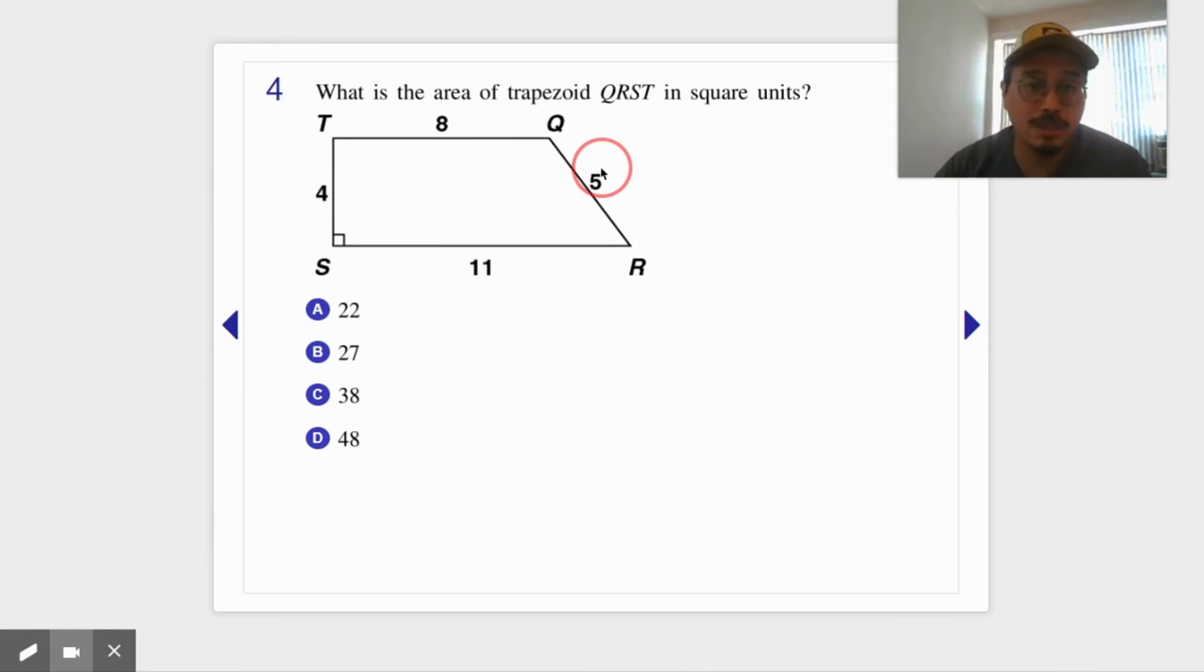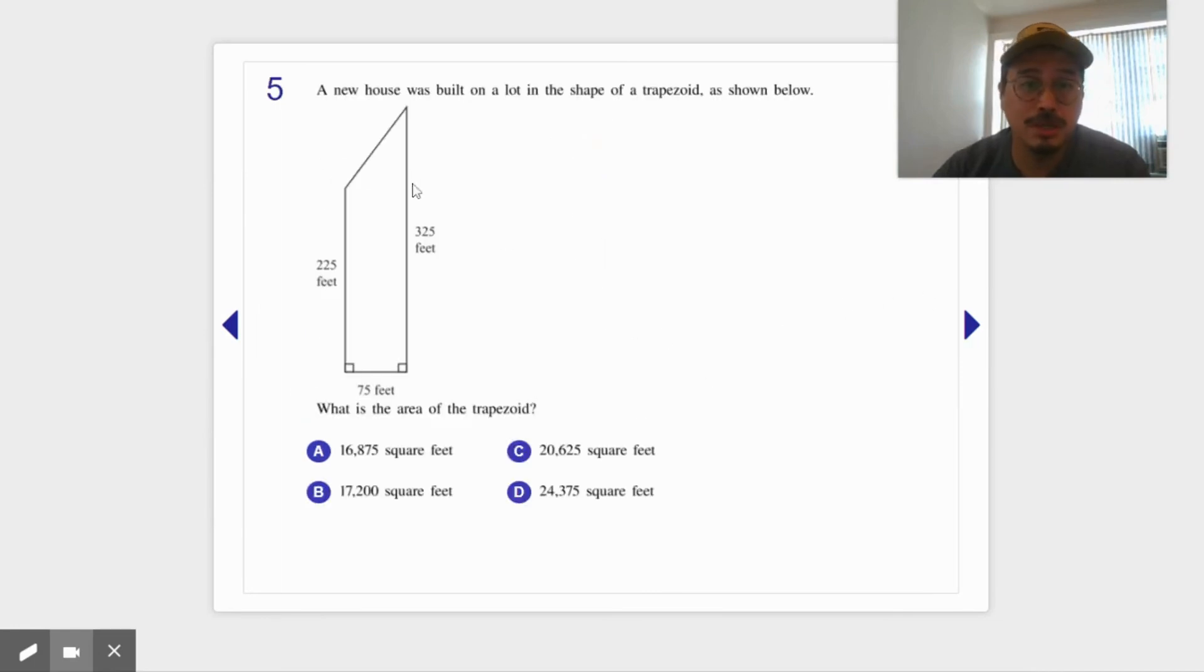Last question. A new house was built in the lot. Now that's a trapezoid, it tells you it's a trapezoid. First of all, second - base 1, base 2, that's the height. So don't get thrown off by that, don't use the incorrect numbers.